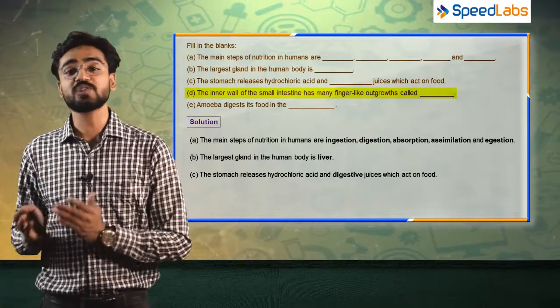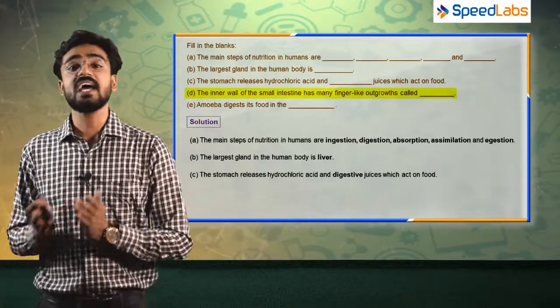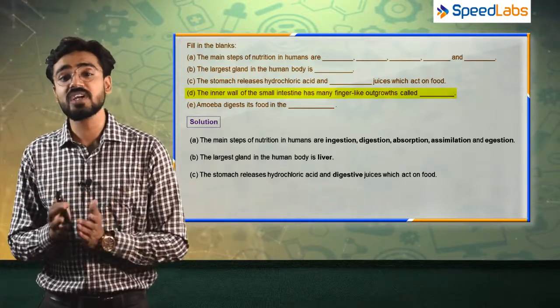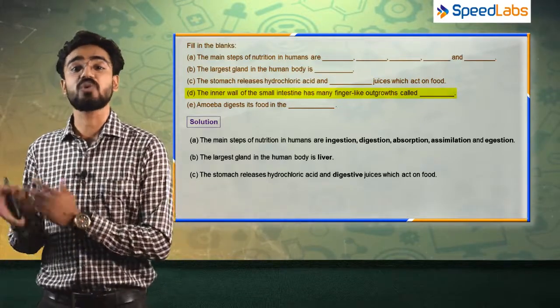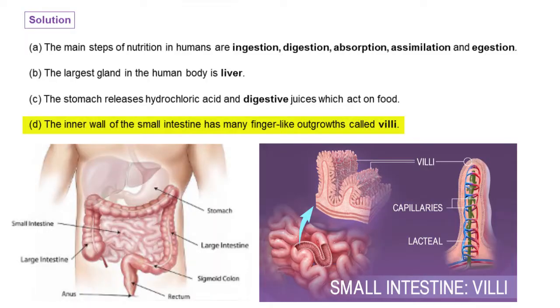The fourth question: the inner wall of the small intestine has many finger-like outgrowths. In the inner wall of our small intestine, you can see small finger-type outgrowths — these are known as villi. So villi is the right answer for our fourth fill in the blank.